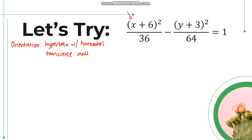Now we can get from the equation the values of a squared and b squared. a squared is equal to 36 — it's always the first denominator. And b squared is 64. From here we can identify the values of a and b, so a is equal to 6 and b is equal to 8.